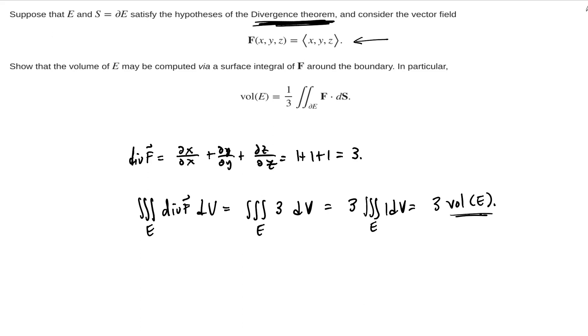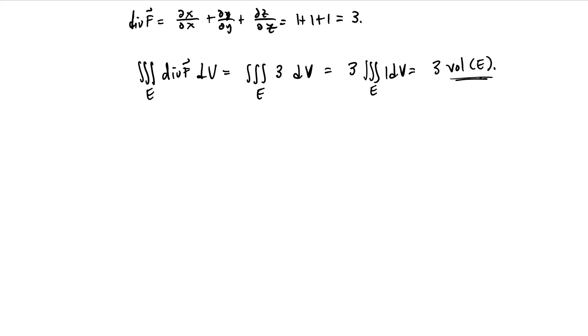On the other hand, the divergence theorem applies, and we can actually do it. So the divergence theorem says what? It says that the triple integral over the region E of the divergence of f dV, this is just equal to the flux around the boundary.